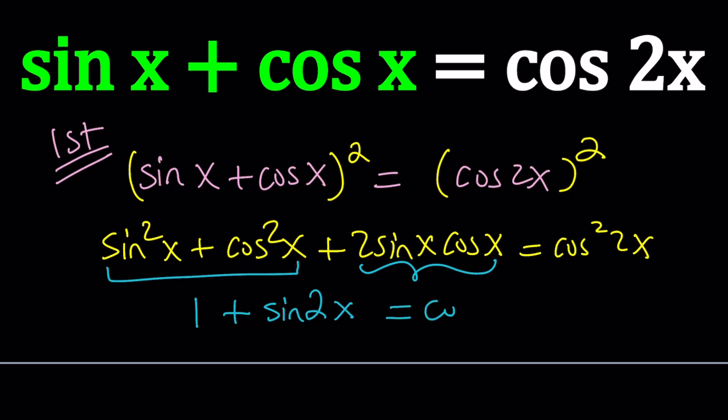Now why is this helpful? Because sine and cosine are related. Again, for the same reason, by the Pythagorean theorem, we can write cosine squared as 1 minus sine squared.